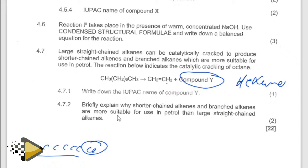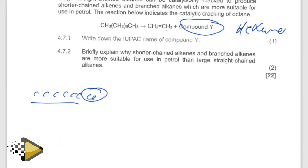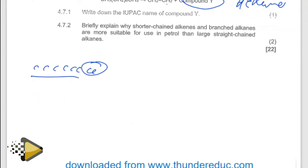Branched chain alkanes are more suitable for use in petrol than straight chain alkanes. Why are they more suitable? They're more suitable because short chain alkanes have lower intermolecular forces of attraction, therefore they have a lower boiling point. Therefore they are more flammable — they can burn easily to produce energy. That's why they are used in petrol.